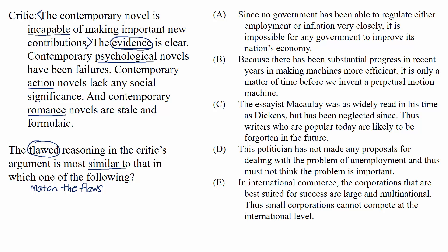A great way to identify an argument's flaw is to look for the gap between the evidence and the conclusion. The conclusion only addresses the contemporary novel in general — anything that falls into the category of contemporary novel, the critic says, can't make important new contributions. But this opinion is based on just a couple of specific examples of contemporary novels, like action novels and romance novels.